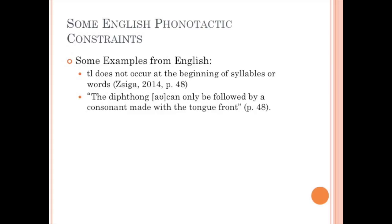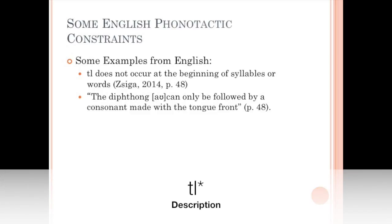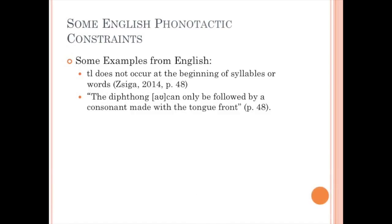Giga gives some examples of phonotactic constraints in English. The sound tl does not occur at the beginning of syllables or words — we don't have words like tlase, even though we do have words like trace. Tl can occur between syllables, as in Atlantic, but it cannot occur at the beginning of syllables.